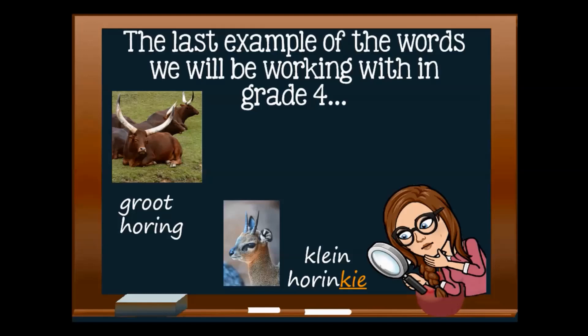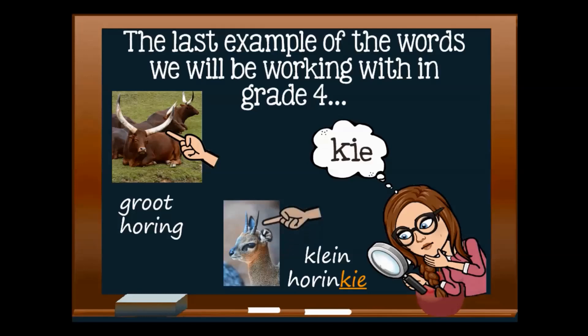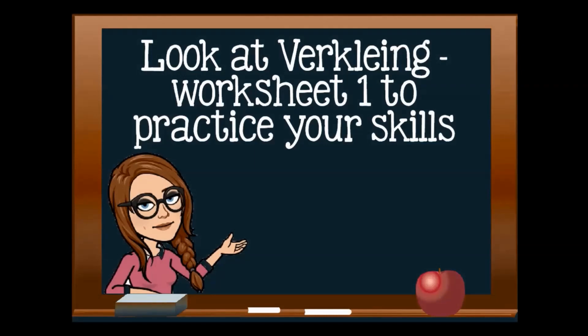We are almost finished now, and our last example is about the sound 'kie'. When we talk about the cattle here, they have groot horings, or big horns. But the little buck at the bottom has small horinkie, or small horns.